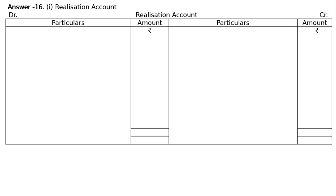The question is: Bale and Yale are equal partners of a firm. The last line asks to prepare the realization account, partners' capital accounts, Bale's loan account (very important), and bank account. Hence, answer 16.